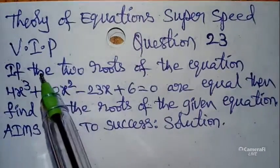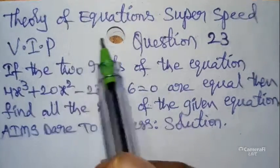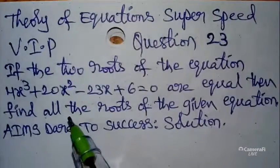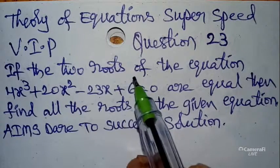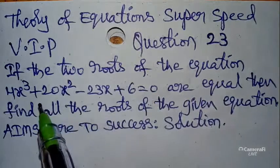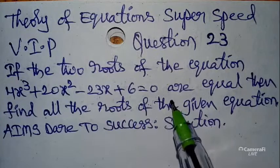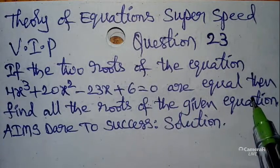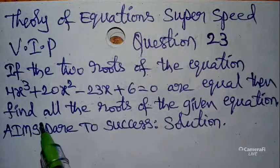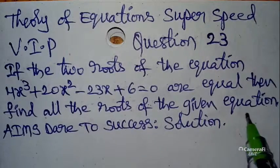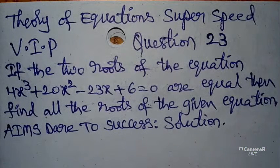I am very happy to say that I have already uploaded 22 VIP questions from the Theory of Equations chapter. Now today our question is: if two roots of the equation 4x³ + 20x² - 23x + 6 = 0 are equal, find all the roots of the given equation.